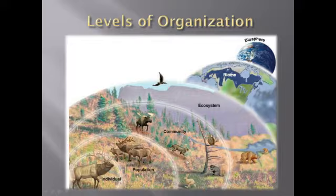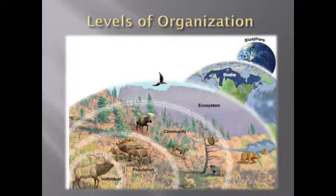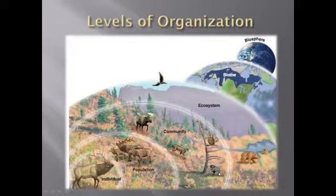The next level is the biological community, also just called a community — they mean the same thing in ecology. A community is all the organisms living in a particular area. In the example shown, that includes owls, bobcats, rabbits, trees, a beaver, a moose, and various other organisms — all together forming the biological community.